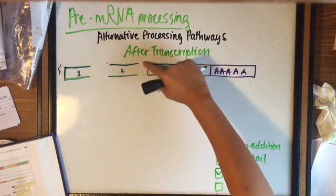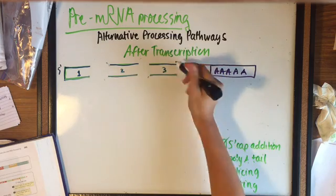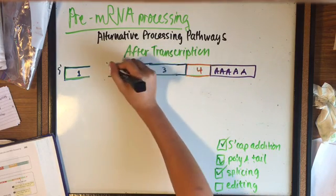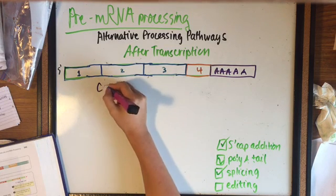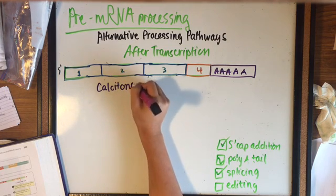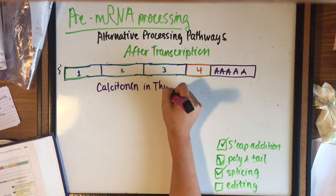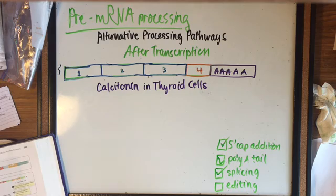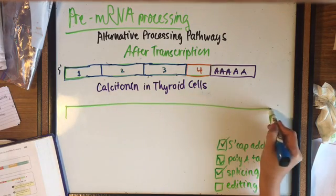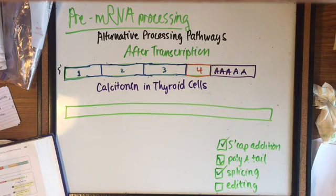Once all the introns are cut out, this will produce an mRNA that contains exons 1, 2, 3, and 4. This new mRNA is called calcitonin, which is produced mostly in thyroid cells. This is an example of the alternative processing pathway of multiple 3' cleavage sites.